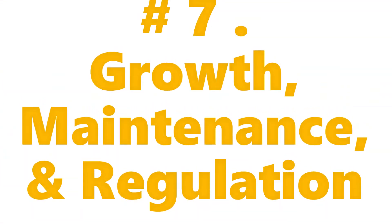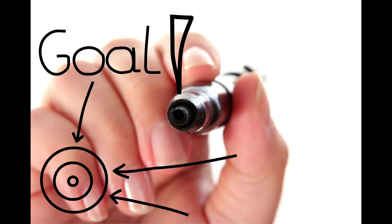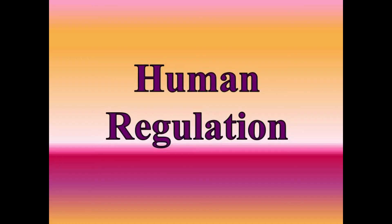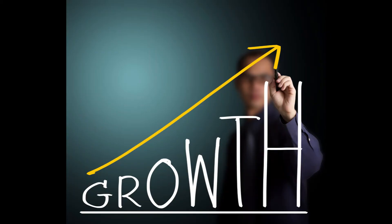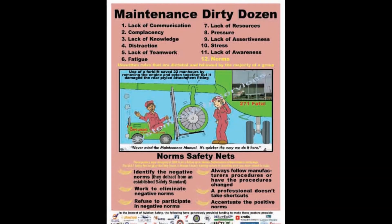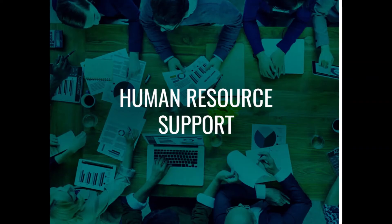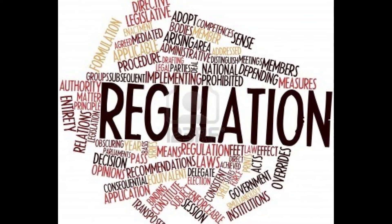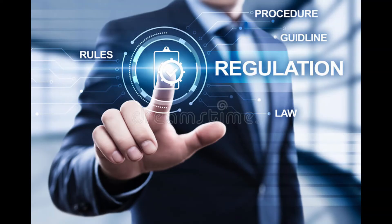Development involves growth, maintenance, and regulation. The mastery of life often involves conflicts and competition among these three goals of human development. Growth is development from a simpler form to a more complex form — maturing and becoming fully developed. Maintenance is the upkeeping and sustaining of a condition. Regulation has to do with the state of being controlled under the force of regulating content.